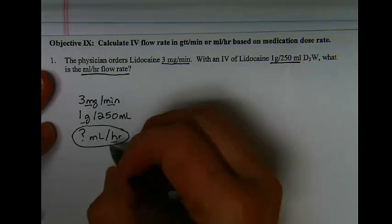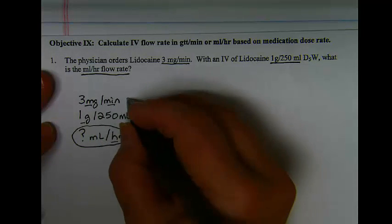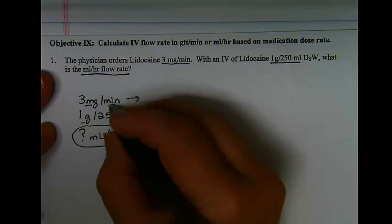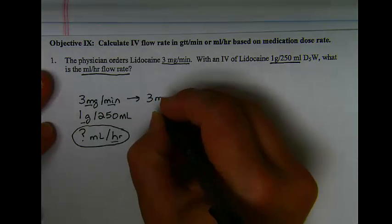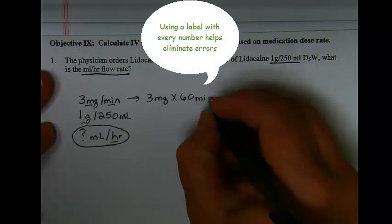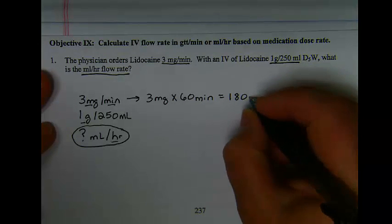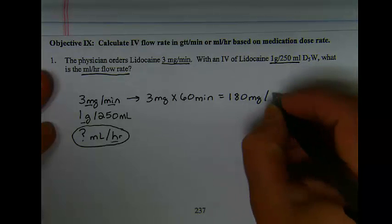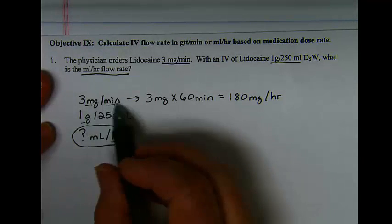Knowing that I'm delivering my medication by an hour, I'm going to convert this to an hourly rate by 3 milligrams multiplied by 60 minutes. So I would need 180 milligrams per hour based on this order.